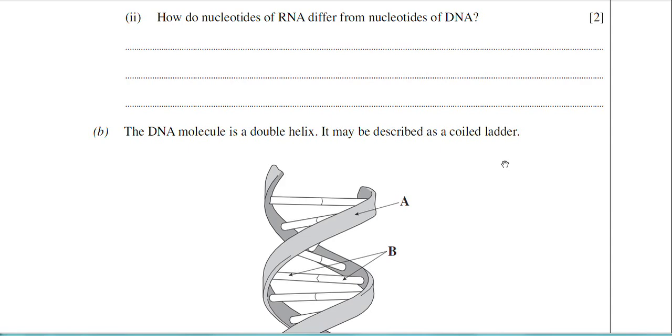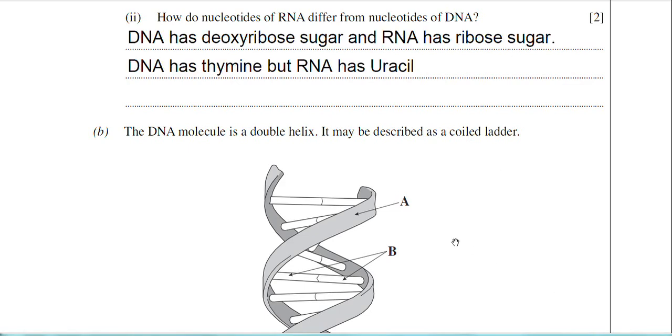The other difference is to do with the bases. In DNA, the nucleotide will have the thymine base, whereas in the RNA nucleotide, you can only get the uracil base. So there's two immediate differences there between DNA and RNA nucleotides.